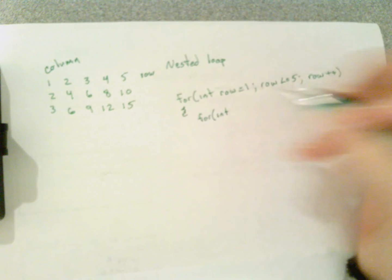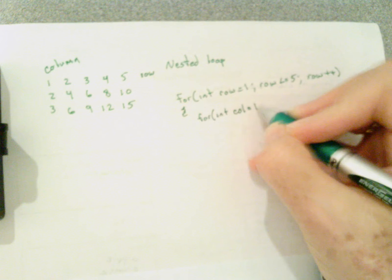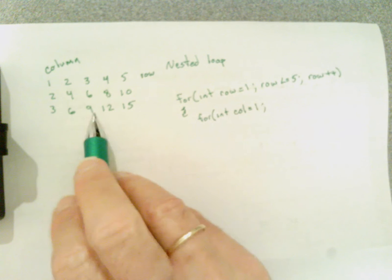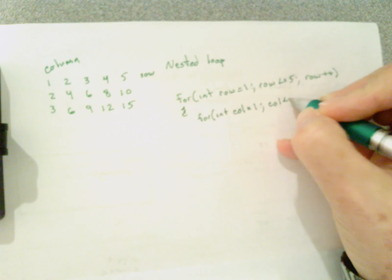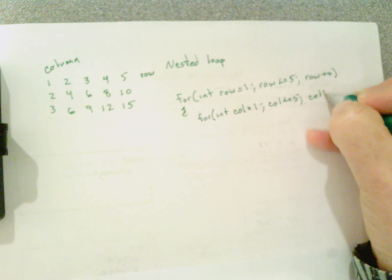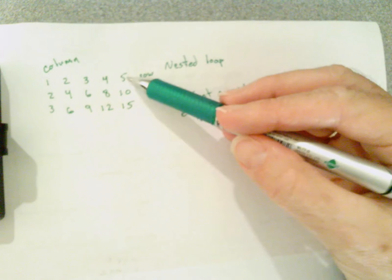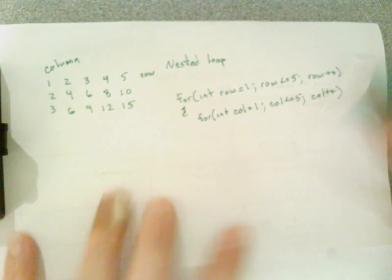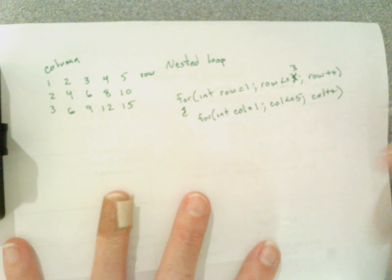Each time... excuse me, I made a mistake. That's okay. Each time I loop through my row I want to print out how many columns: one two three four five columns. So column less than or equal to five, column plus plus. And here's where I realized that I made a mistake. How many rows do I have? I only have three rows: one two three. I do not have five rows, so I have to change this and make it a three instead of a five.